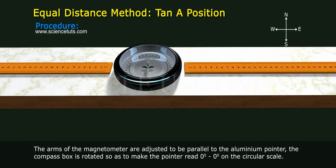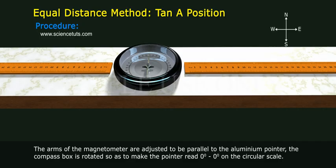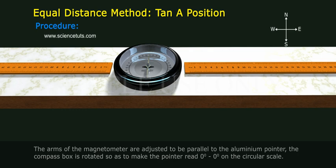The arms of the magnetometer are adjusted parallel to the aluminum pointer. The compass box is rotated so as to make the pointer read zero degree on the circular scale.